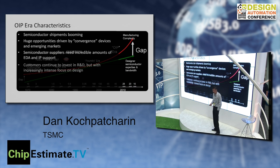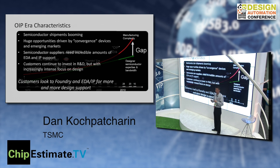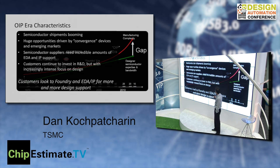What are the characteristics of this OIP era? Wafer shipments are going up. We are building fabs at an unprecedented rate. There's a huge opportunity from convergence. The products out there require tighter time-to-market, more and more functionality. Customers can still invest in R&D, but they need more and more help to do the design.